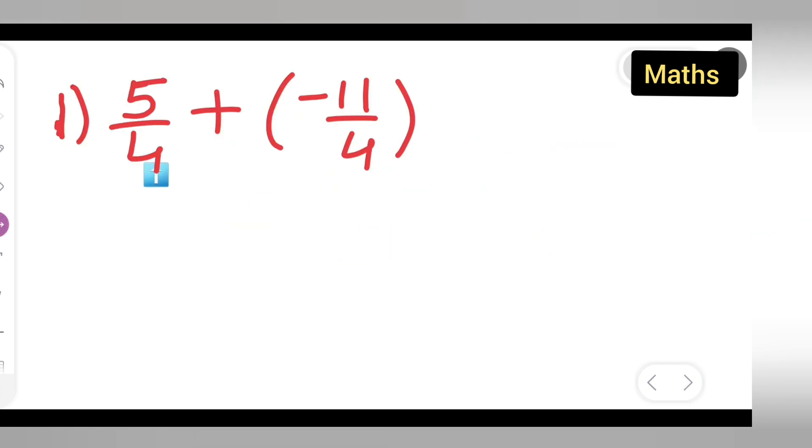Find the sum of 5/4 + (-11/4). So first, what we need to do is remove the brackets. Write down: 5/4 + (-11/4) equals...